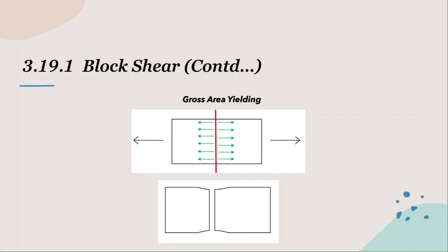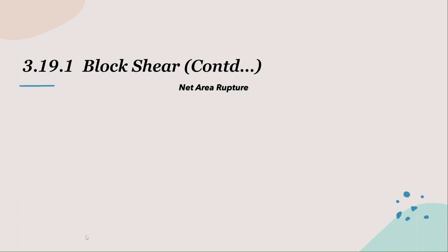We learned about this in part one of the course when we discussed the stress-strain behavior of steel. If you did not enroll for part one, just browse lecture 1.7 in part one — it's a preview lecture so you will be able to view it. We observe that each element of this section was in tension before it fractured, hence gross area yielding is a pure tension failure.